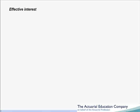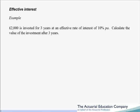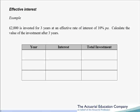Next up let's look at effective or compound interest. Unlike simple interest, we will be earning interest on the interest. Let's look at the same investment as before: £2000 invested for three years at an effective rate of interest of 10% per annum. Calculate the value of the investment after three years. Again let's put this in a table. In year one we start with £2000, apply 10% interest which is £200, giving a total investment of £2200 at end of year one.